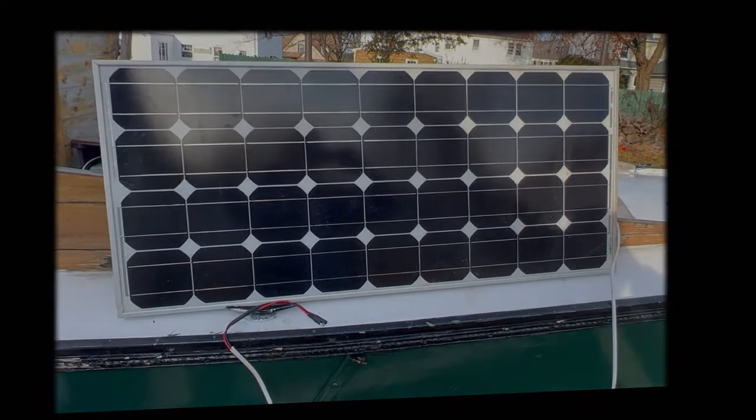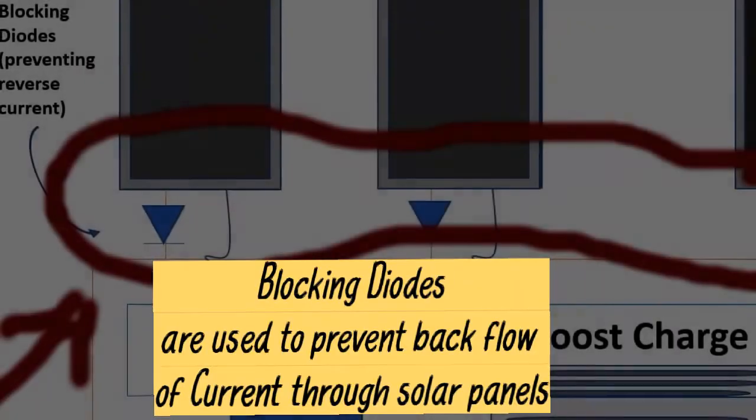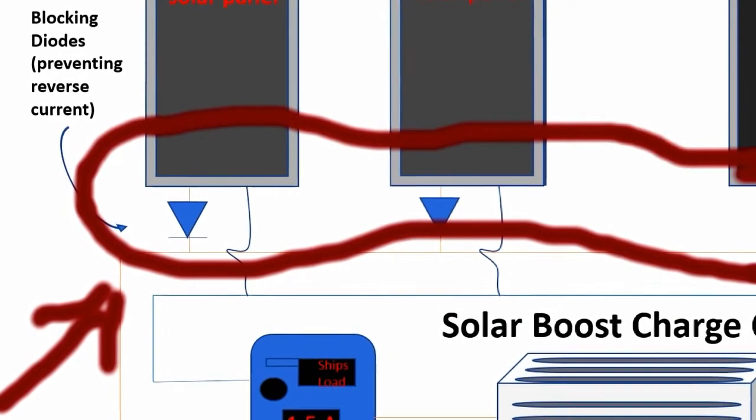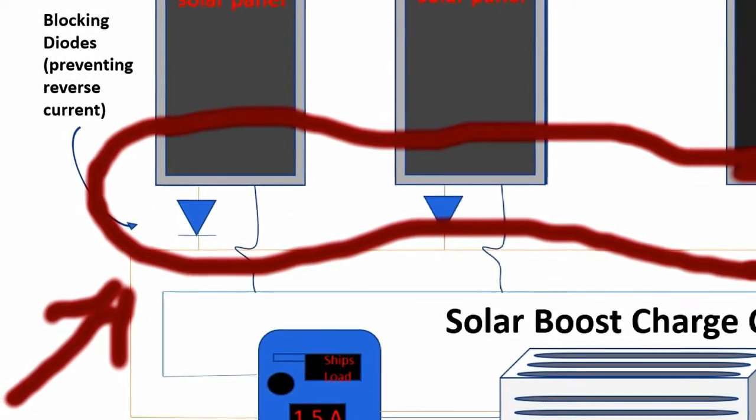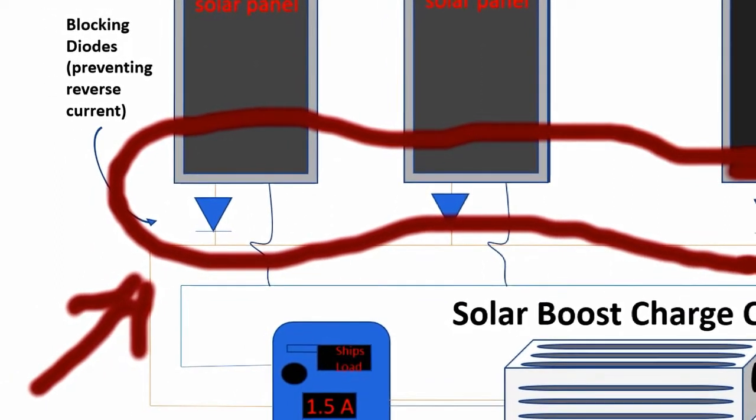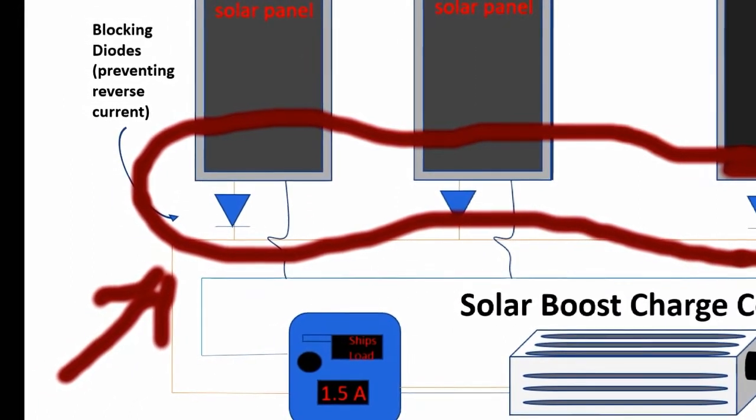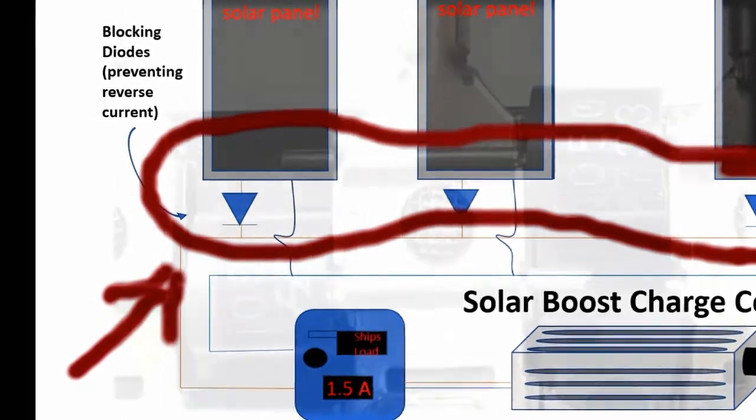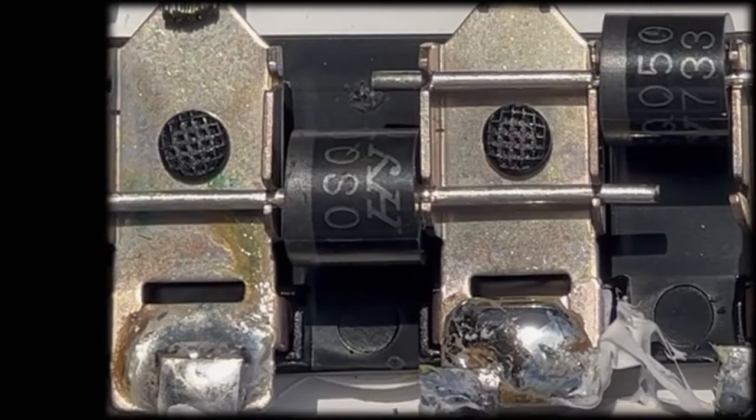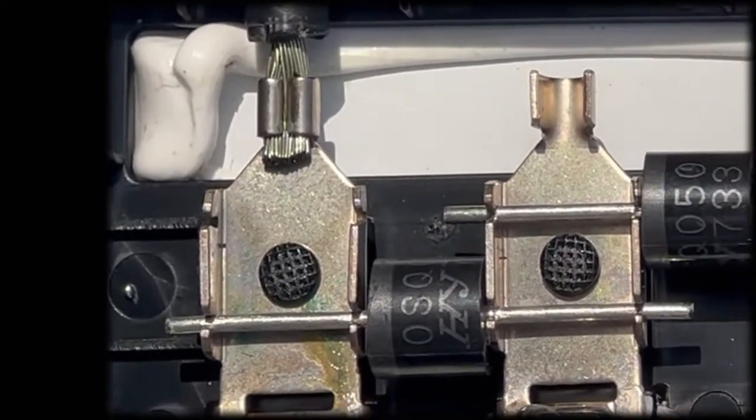And you'll see them here on the diagram and represented with the triangle on the line, and what those do is they keep the battery from draining. You would want to know whether you were putting your panels together in series or parallel to know which way they go. But here we're using them so that the solar panels do not get a back charge.